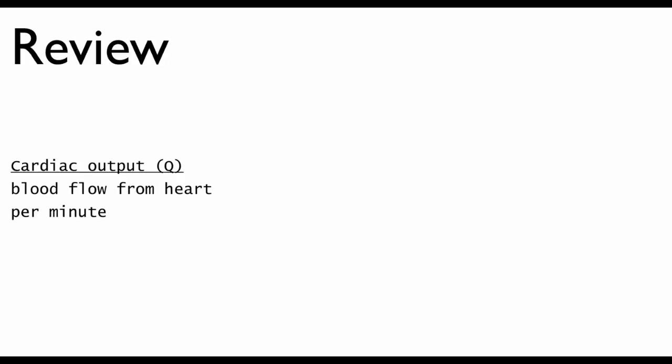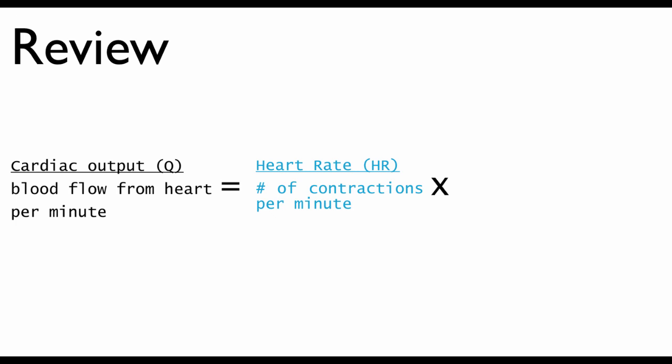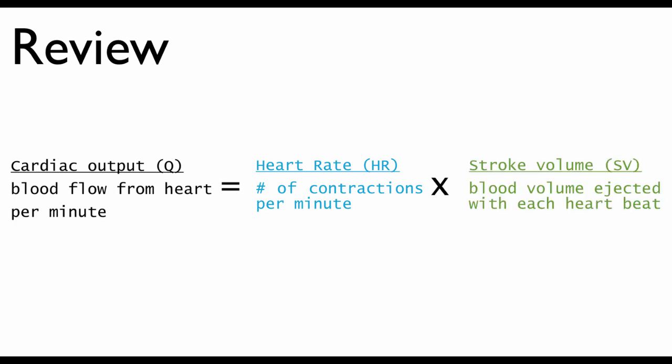To review, cardiac output is the total amount of blood flowing from the heart in one minute, and it's going to be determined by multiplying heart rate — which is the number of contractions per minute — by stroke volume, which is the blood ejected with each beat of the heart.